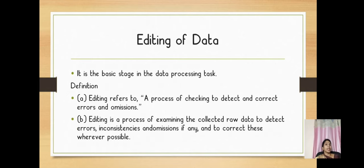Editing of data is the basic stage in the data processing task. Editing refers to a process of checking to detect and correct errors and omissions. It is a process of examining the collected raw data to detect errors, inconsistencies and omissions if any, and to correct these wherever possible. Editing of data plays a vital role while conducting research because if anything has been omitted or any error has occurred, with the help of editing only we will be able to carry further.